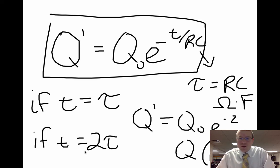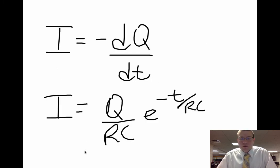So taking the derivative of Q, e to the minus T over RC, what you'll end up getting is Q over RC times e to the minus T over RC. So you still have the exponential decay.